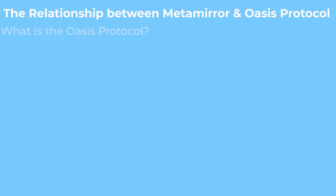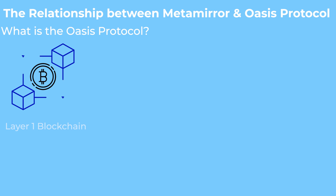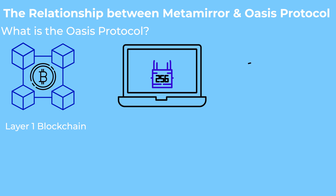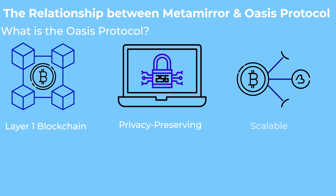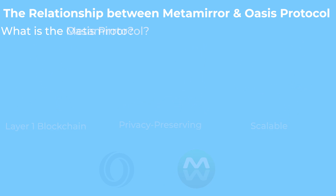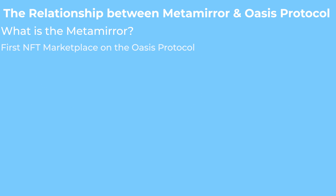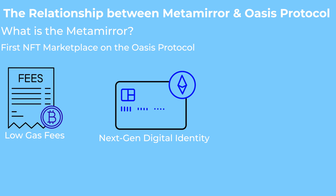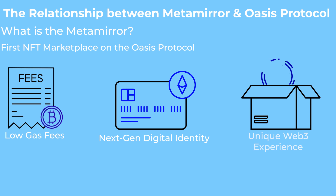What is Oasis protocol and what does it have to do with MetaMirror? Oasis protocol is a layer one blockchain that is popularly known to be privacy preserving and scalable. These features make the Oasis protocol the perfect blockchain for MetaMirror to operate on. MetaMirror is the first NFT marketplace on the Oasis network. It brings perks like low gas fees, next generation digital identity, and a unique Web3 experience for all users to enjoy.